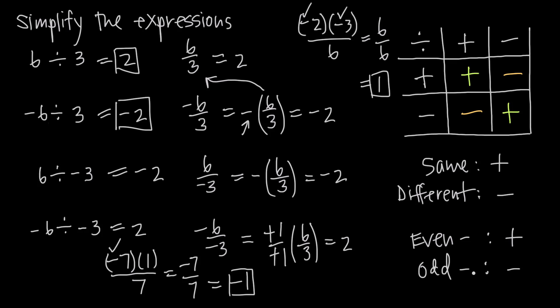So when it comes to dealing with division of signed numbers, just remember: an even number of negative signs will give you a positive result, and an odd number of negative signs will give you a negative result.